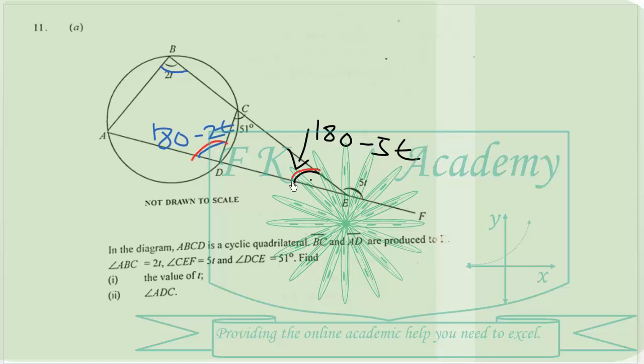180 minus 2T is equal to 180 minus 5T plus 51. When we subtract to give zero, we have negative 2T, then plus 5T will be equal to 51.